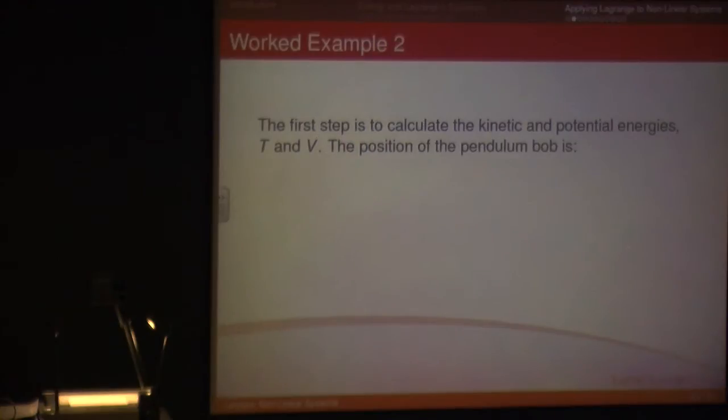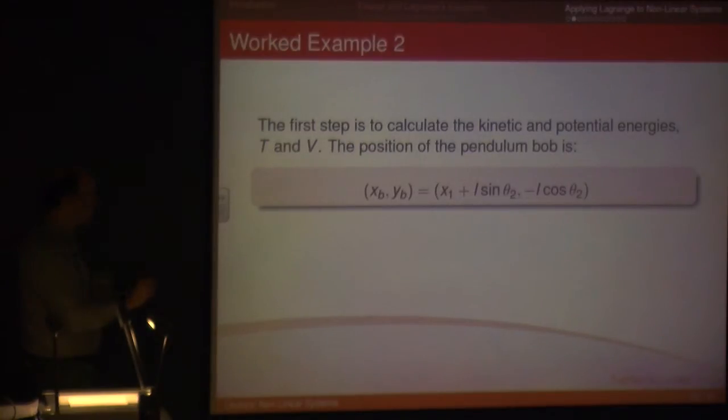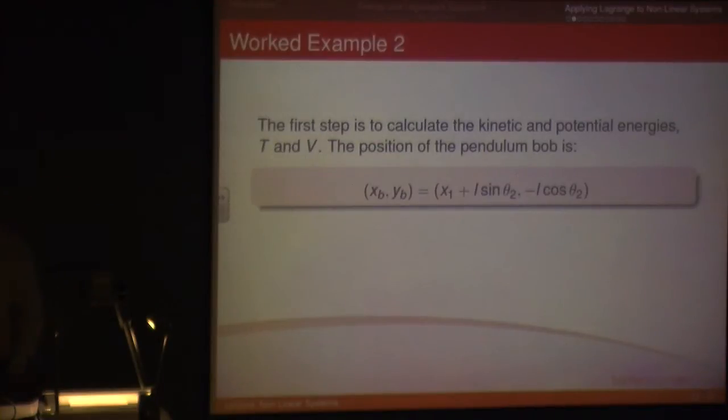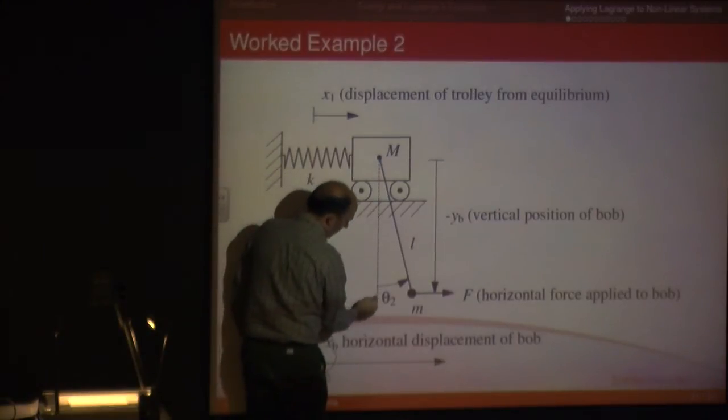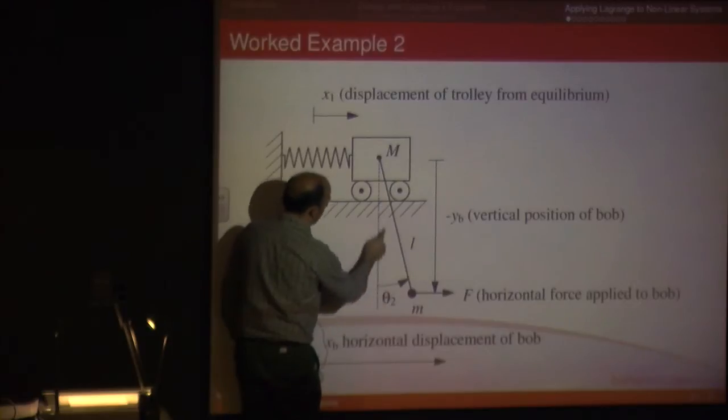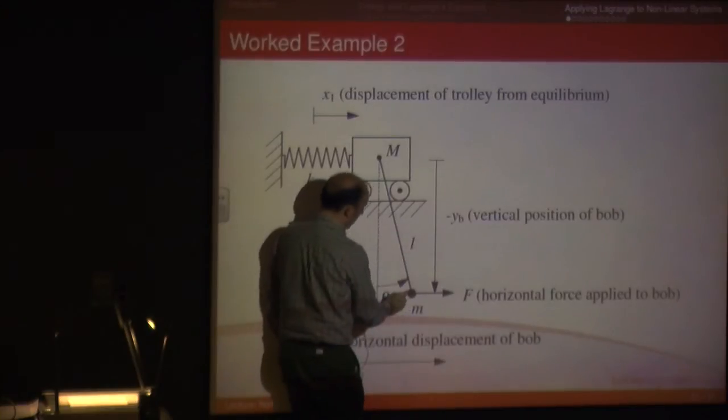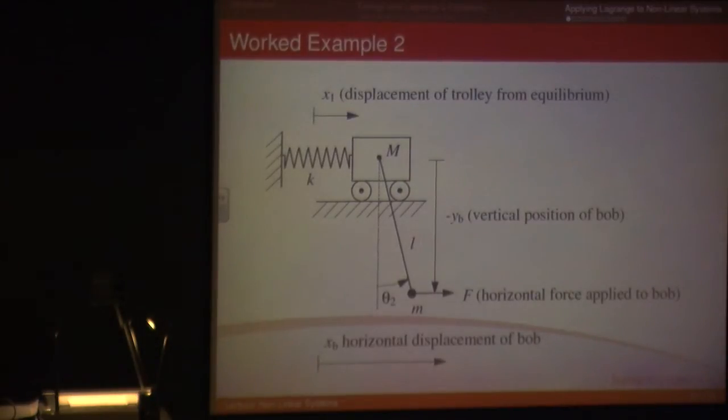The first step is to calculate the kinetic and potential energies, T and V. The position of the pendulum bob is, like I said, take the coordinates of the bob in terms of X and Y. Well, in terms of X, I've got the distance X1 that the trolley has moved, plus L sine of theta 2, which is my angle. OK, and down here I've got the distance between this line and this line, which is going to be L, which is the length of the thing, times by sine of theta 2. The Y distance, YB is going to be minus L times by cosine, which is this distance here, cos of 2. So that's my X and Y position.